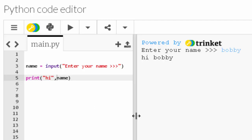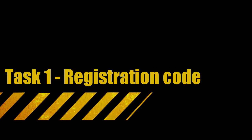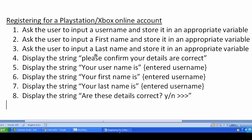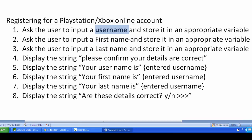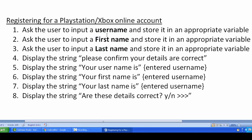Let's have a go at a task. The scenario is registering for a PlayStation or Xbox online account — you've got a brand new console and you're logging in to set up your account. Here's what to code: ask the user to input a username and store it in an appropriate variable; ask the user to input a first name and store it in an appropriate variable; ask the user to input a last name and store it in an appropriate variable. Spoiler alert — you might need to use a particular function.